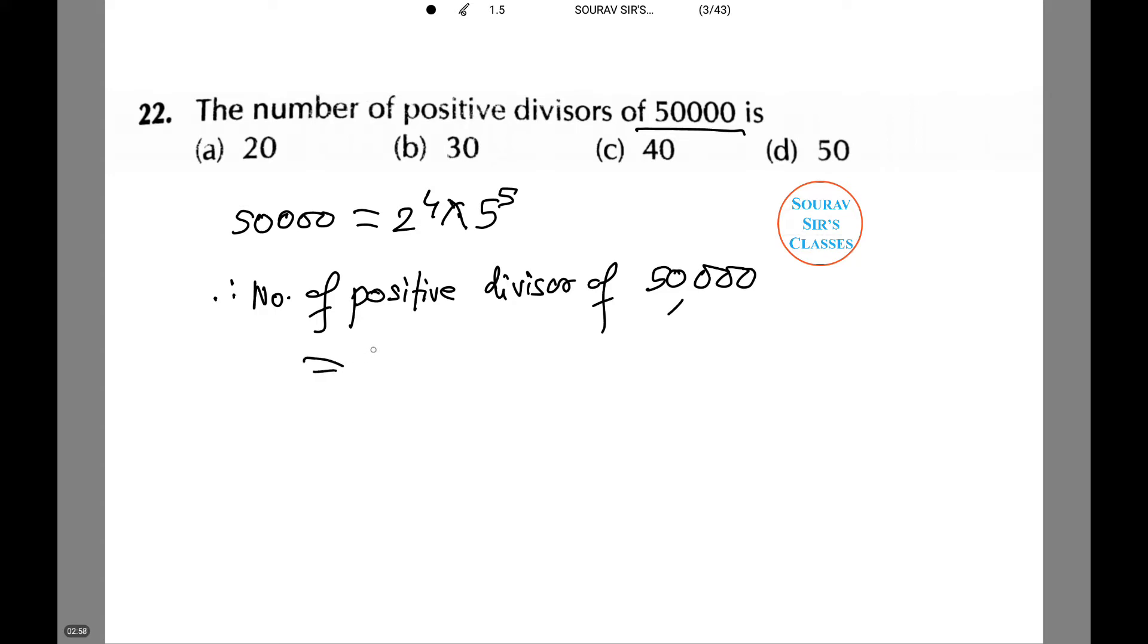The formula gives 4 plus 1 times 5 plus 1, which is equal to 5 times 6, which is equal to 30. Hence option B is correct.